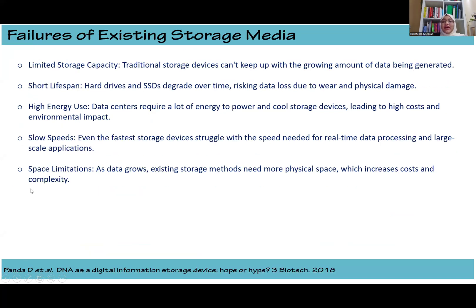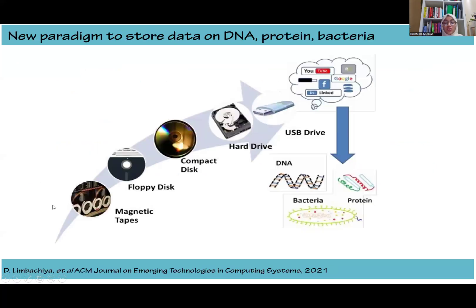Change is more led by the failures of the old rather than the appeal of the new. So what were the failures of existing storage media that made us look for alternatives such as DNA? Firstly, the limited storage capacity — traditional storage media cannot keep up with the growing amount of data. Further, the short lifespan of hard drives and disks risks data loss. There is also high energy use, not only for cooling the devices but also for powering them, along with slow writing and reading speeds and high space limitations. The following paradigm shows how we evolved from magnetic tapes to floppy disks, compact disks, hard drives, and USBs, and how in the near future — mostly by the next decade — we would be moving to DNA to store data.